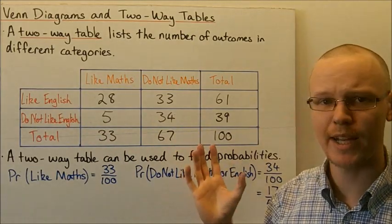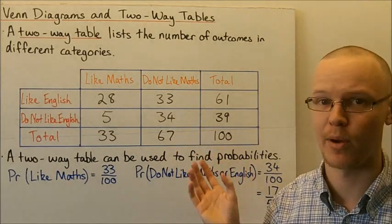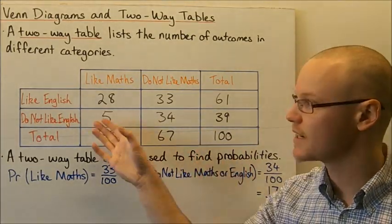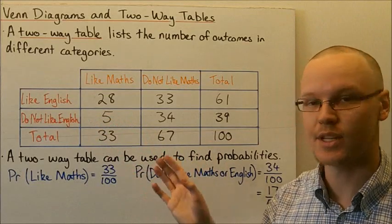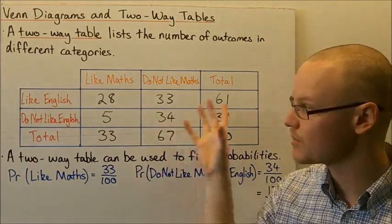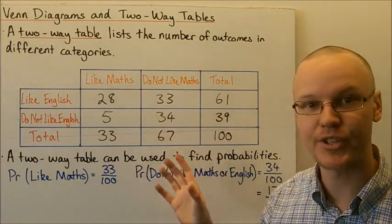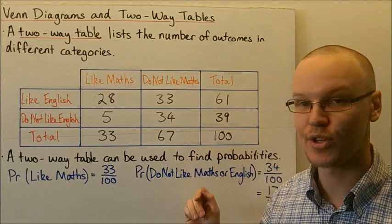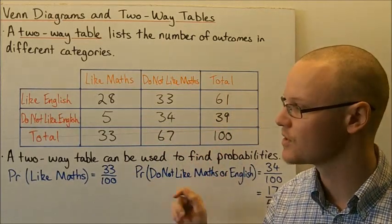We can determine the probabilities of finding a student in each of the four categories, or even combinations of those categories, using these two-way tables.